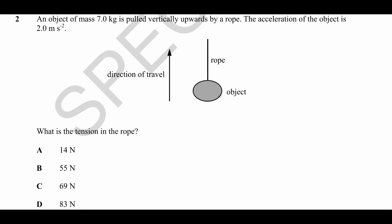Question number two gives us an object with a mass of seven kilograms being pulled upwards by a rope. And we know that the acceleration of the object is two meters per second squared.